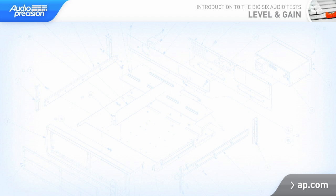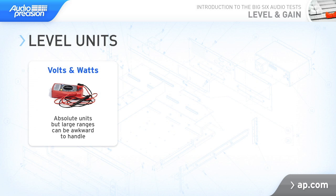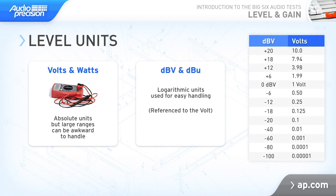Level can be expressed in several different units. In the analog domain, the most common are volts, watts, dBV, or dBU. The digital domain has its own set of units, which we'll discuss in a later tutorial. Engineers like to use dB, short for decibel, because it's a logarithmic unit, so large ranges can be expressed in simple numbers.